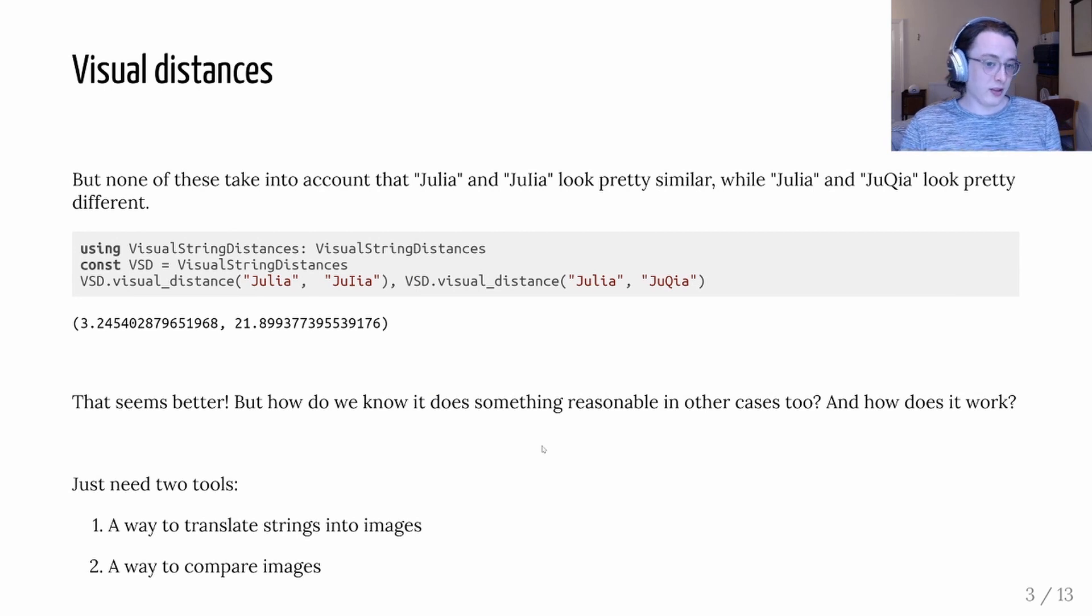Visual string distances has this function visual distance. And according to that, the distance between Julia and Julia with the capital I is only 3.24. But the distance between Julia and Julia with the capital Q is 21.9. So that seems like it's doing something like what I wanted. But how do we know it does something reasonable in other cases too? And how does it work?